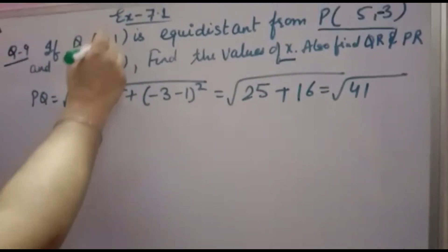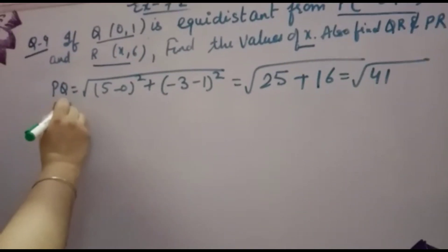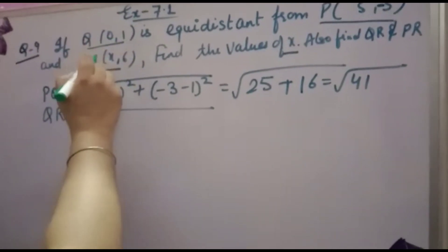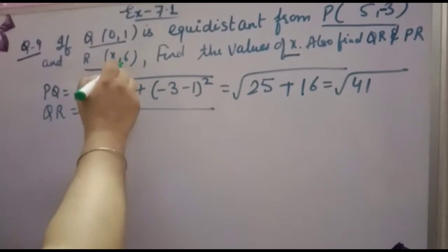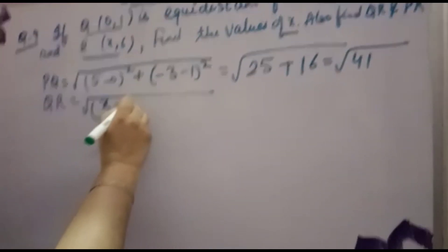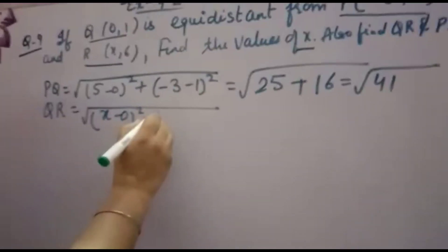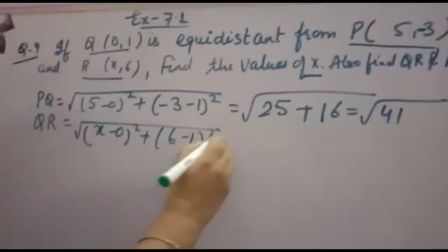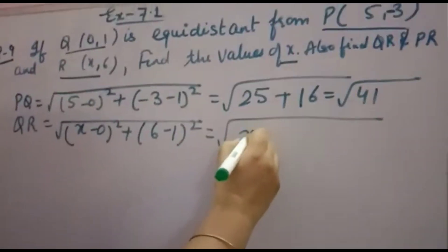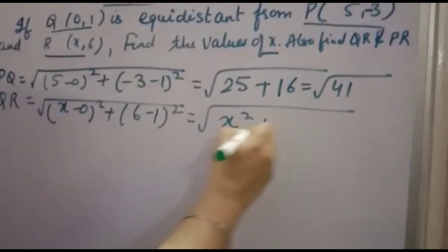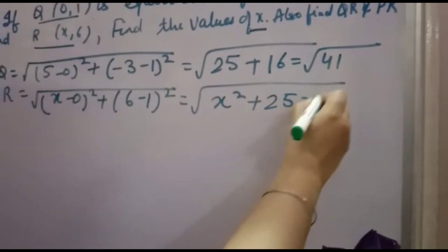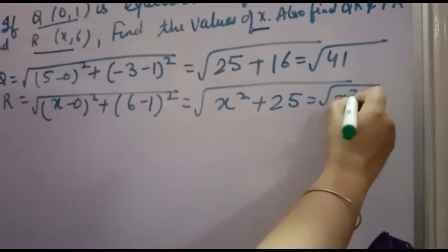Now distance between Q and R. Suppose this is X1, this is Y1, this is X2, this is Y2. Distance formula: (X2−X1)² + (Y2−Y1)². X minus 0 squared is X squared. 6 minus 1 is 5, 5 squared is 25. So we get √(X² + 25).